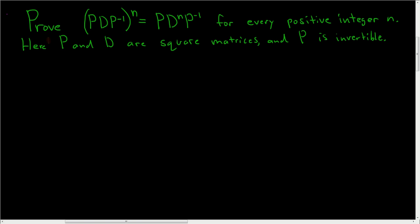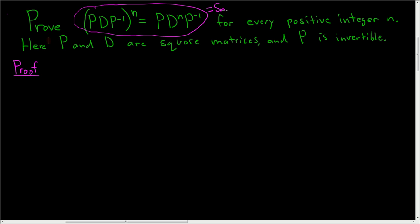Prove that (PDP⁻¹)ⁿ is equal to PDⁿP⁻¹ for every positive integer n, where P and D are square matrices and P is invertible. Proof: we'll go ahead and try this by induction. Our statement S_n will be this equation.